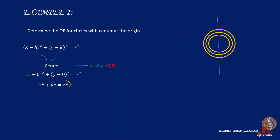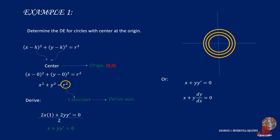From here, it is noted that there is one constant, which means that we can derive once. By deriving, we get 2x plus 2y y-prime is equal to 0. Dividing by 2 simplifies it to x plus y y-prime is equal to 0. In dy/dx form, this becomes x dx plus y dy is equal to 0.